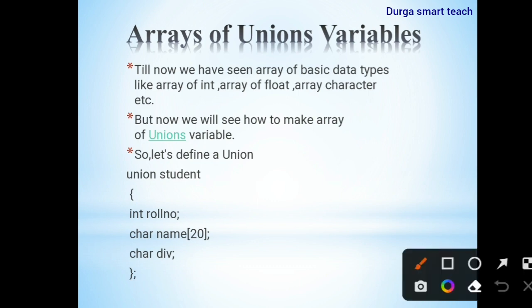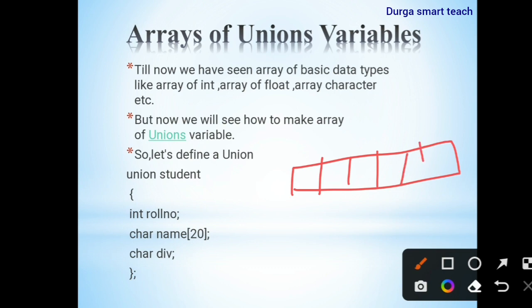We all know an array is a collection of data stored in continuous memory locations, but the condition is that an array is used to store only similar data items — for example, if you want to store integers, you need to store all integer variables. Union, on the other hand, is a collection of different data types stored in a continuous memory location.